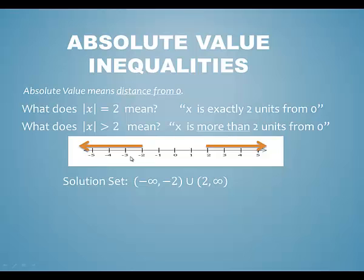All numbers left of negative 2 we represent with the interval negative infinity to negative 2. Any number greater than 2 we represent with the interval 2 to infinity. These are disjoint separate sets, so we give our answer as the union of the two sets. The intersection wouldn't make any sense here because there is no intersection.